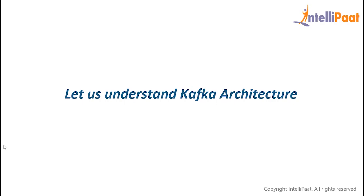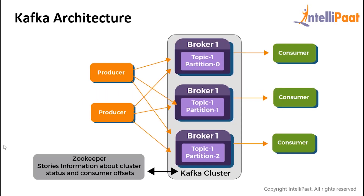Now it's time to understand Apache Kafka's architecture. The producers will send messages to a topic at regular intervals. Brokers store the messages in the partitions configured for that particular topic. If a producer sends two messages and there exist two partitions, Kafka will store one message in the first partition and the second message in the second partition. The consumer always subscribes to a specific topic. On receiving the message, the consumer sends an acknowledgement to the broker. On receiving the acknowledgement, the offset is changed to the new value and is updated in the ZooKeeper.